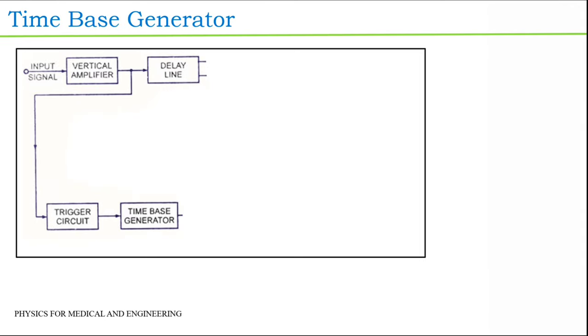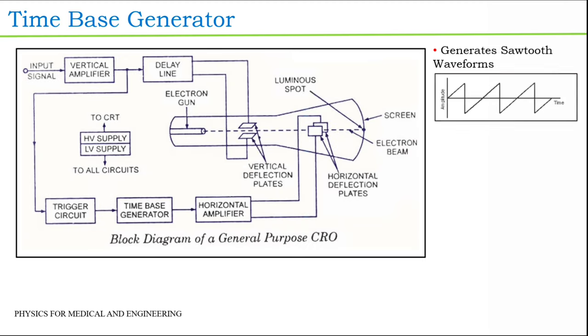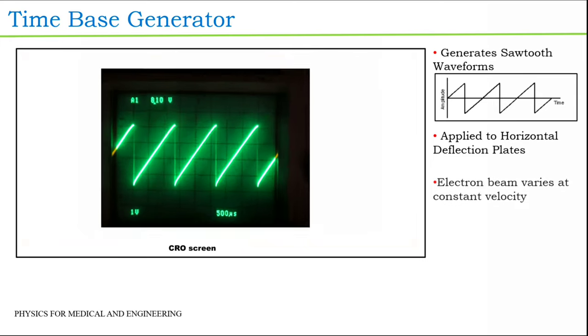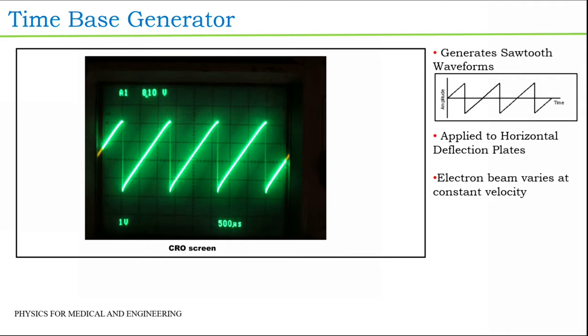The fourth block is the time base generator. Time base generator generates sawtooth waveforms and applies it between the horizontal deflection plates. As the sawtooth varies linearly with time, the movement of the spot on the screen takes place at a constant velocity. Hence, the X-axis of the CRO can be calibrated in terms of time and input can be displayed with respect to time.